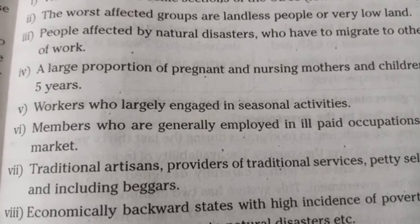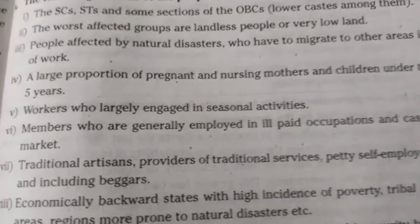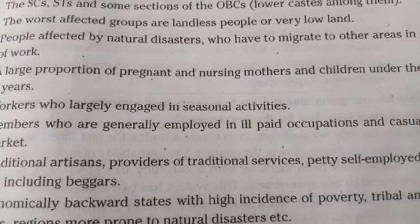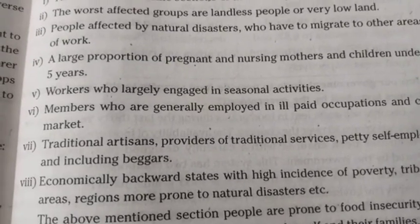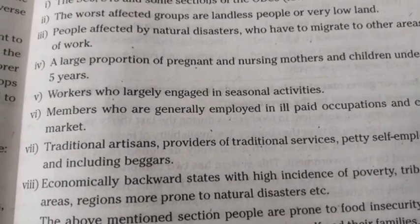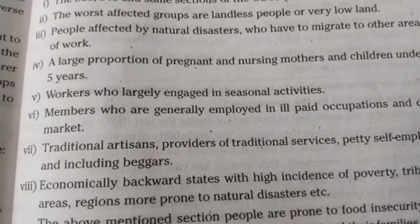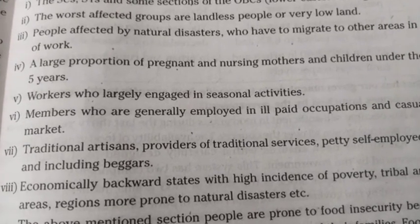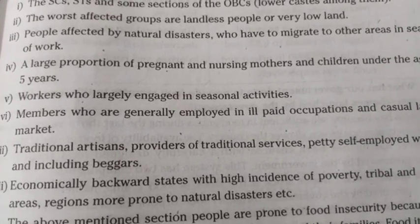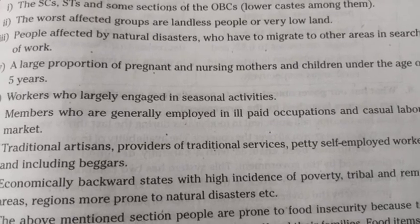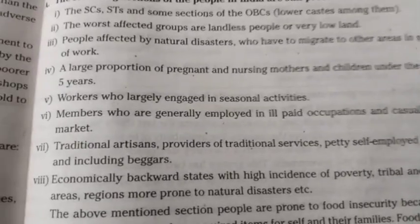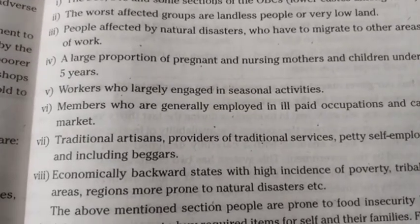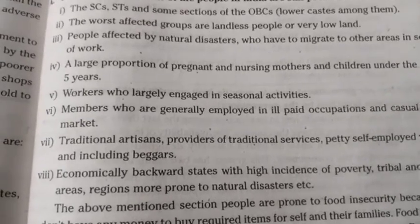6th Point: Members who are generally employed in ill-paid occupations and the casual labor market. 7th Point: Traditional artisans, providers of traditional services, petty self-employed workers, and including beggars.